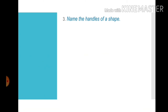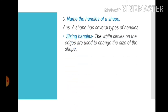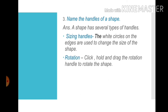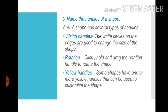Question number three: Name the handles of a shape. Answer: A shape has several types of handles. The first one is sizing handles — the white circles on the edges are used to change the size of the shape. The second one is rotation — click, hold and drag the rotation handle to rotate the shape. The third one is yellow handles — some shapes have one or more yellow handles that can be used to customize the shape.